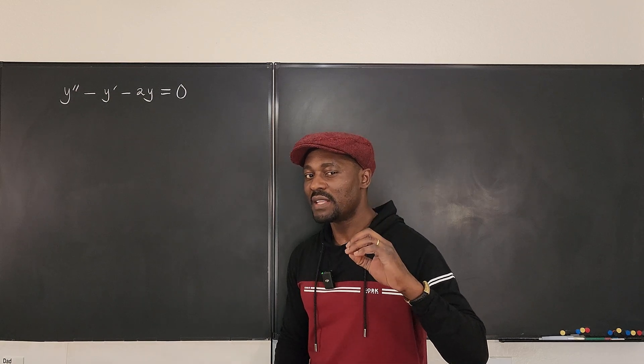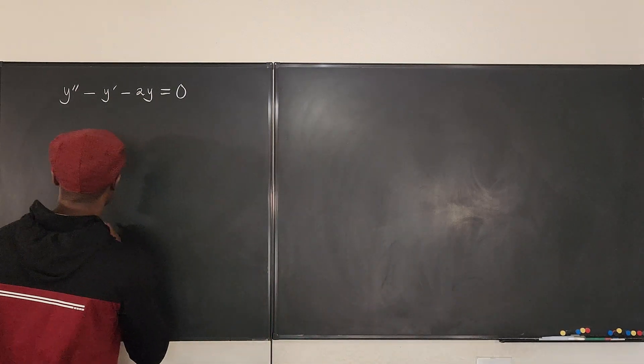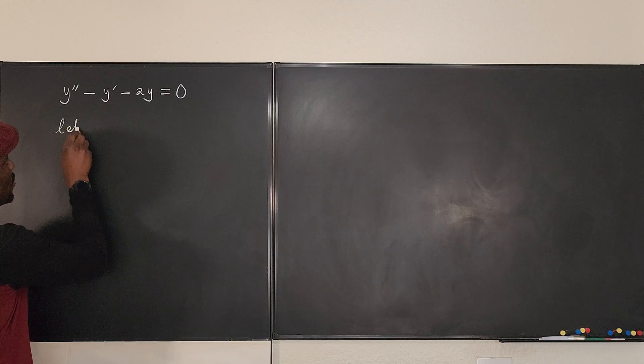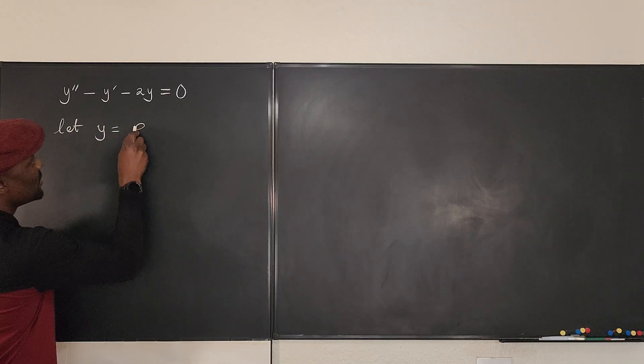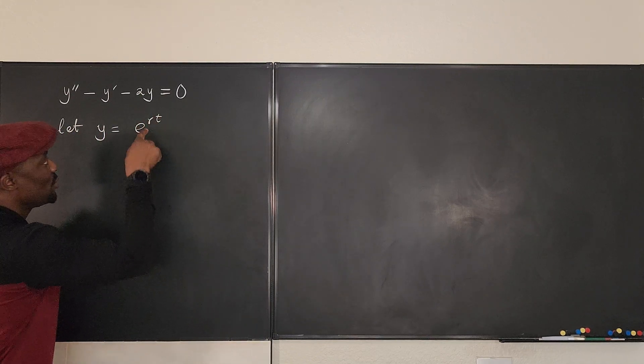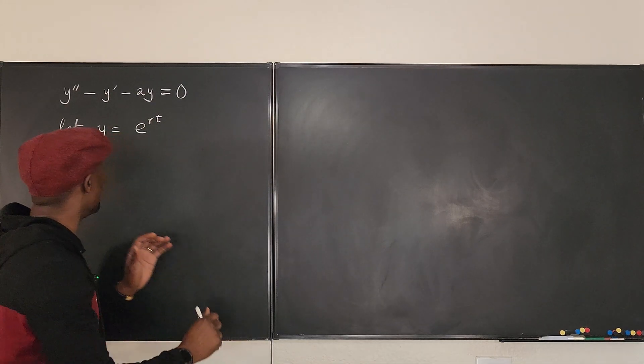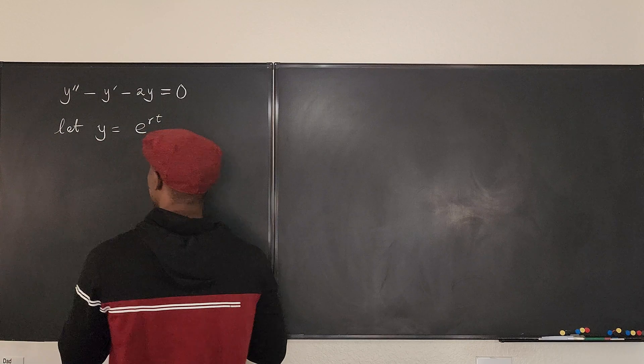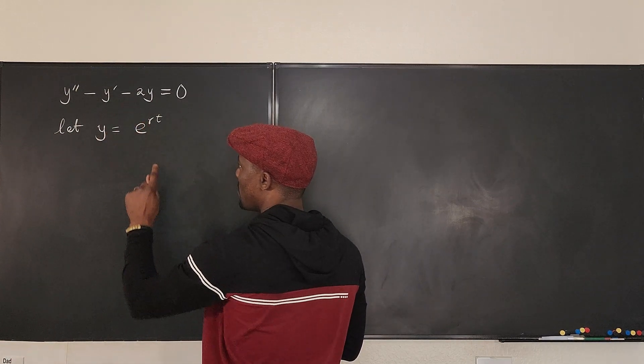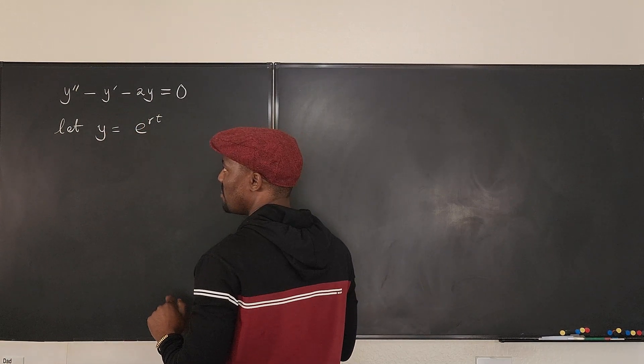Making the assumption that y is an exponential function, we can say that let y be equal to e to the rt. Now I'm choosing my independent variable to be t. So if this is the case, what do you think y prime will be and what will y double prime be?